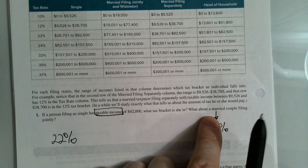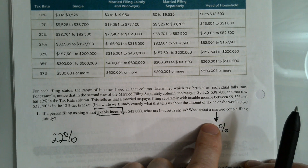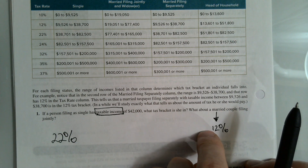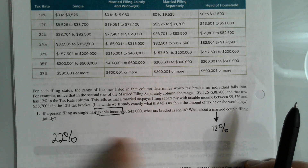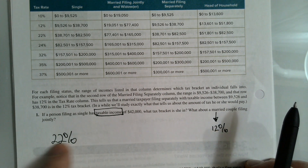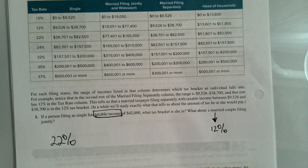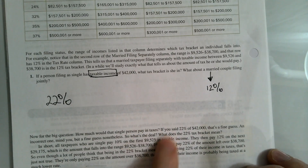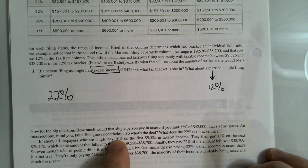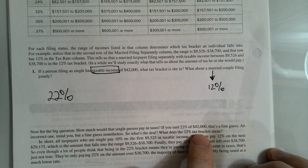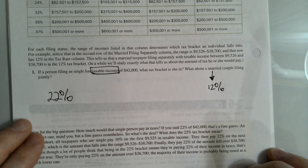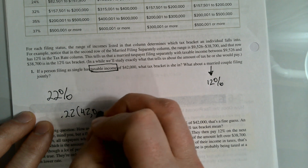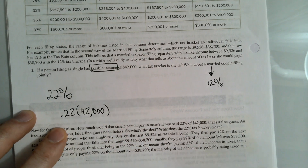The rationale is that the married filing jointly income has to account for two people's costs of living, so they get taxed at a lower rate. Our goal is to calculate how much tax this single person would pay. You might think that because they're in the 22% bracket they pay 22% of their entire income — but that's not the correct answer.